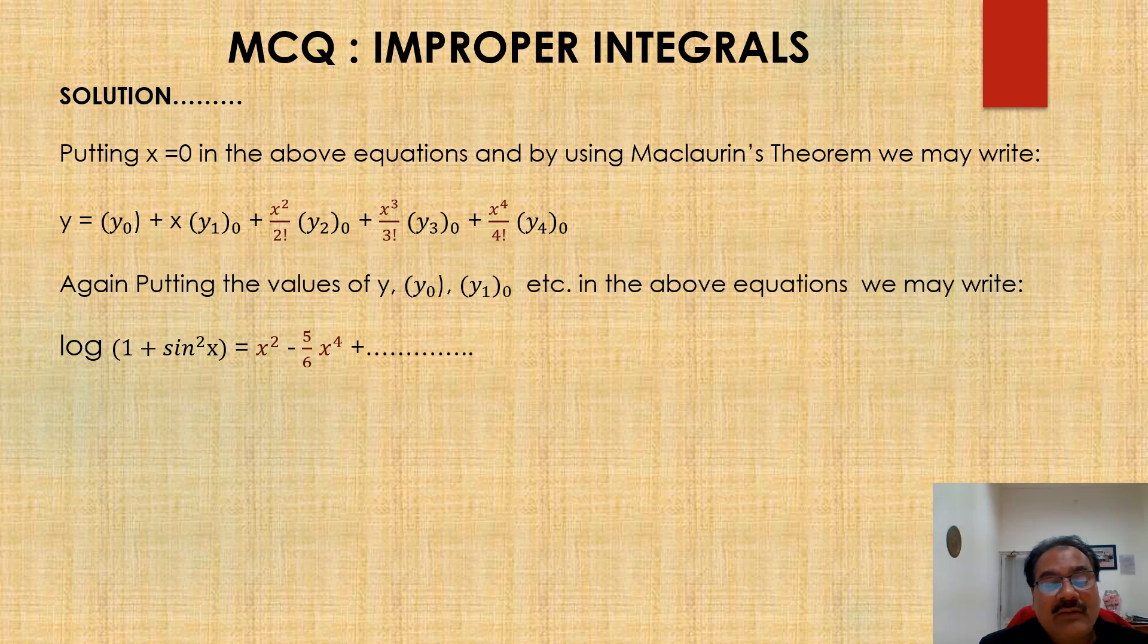Again putting the values of y not, y1 not, y2 not, y3 not and y4 not in the above expression, we may rewrite the expression as log of 1 plus sin square x is equal to x square minus 5 by 6 x power 4 and so on.